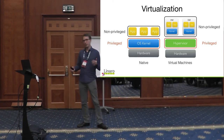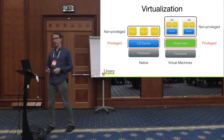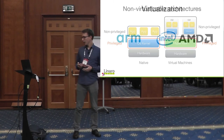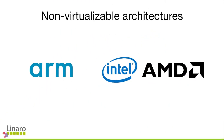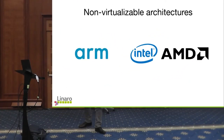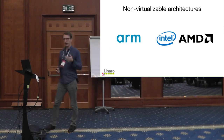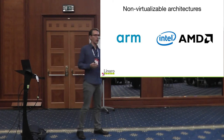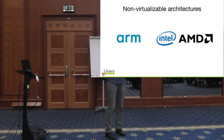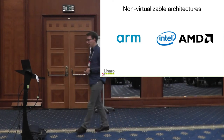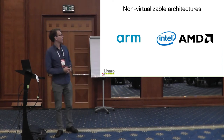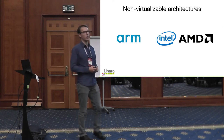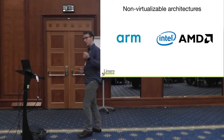Back in the day we did virtualization with trap-and-emulate on virtualizable architectures, running the hypervisor in privileged CPU mode and all VMs including kernel and user space in non-privileged mode. The 1974 paper gave a strict set of requirements for when an architecture is virtualizable. ARM and x86 are examples of architectures which are not virtualizable, so they introduced hardware support for virtualization.